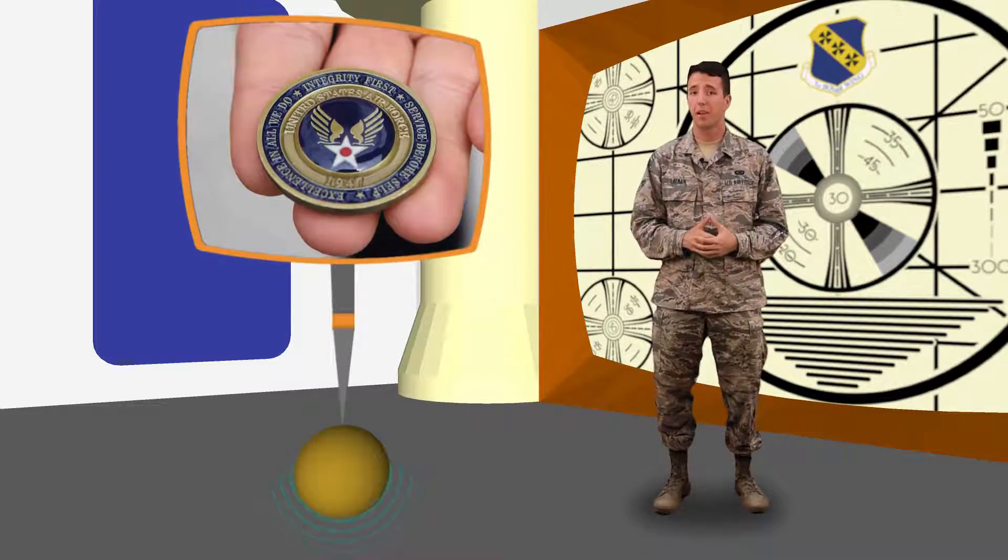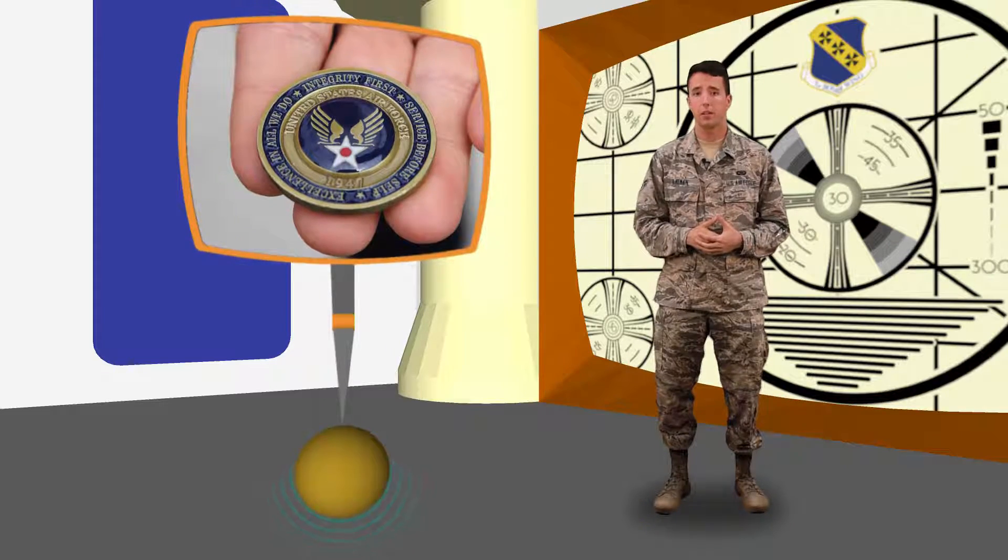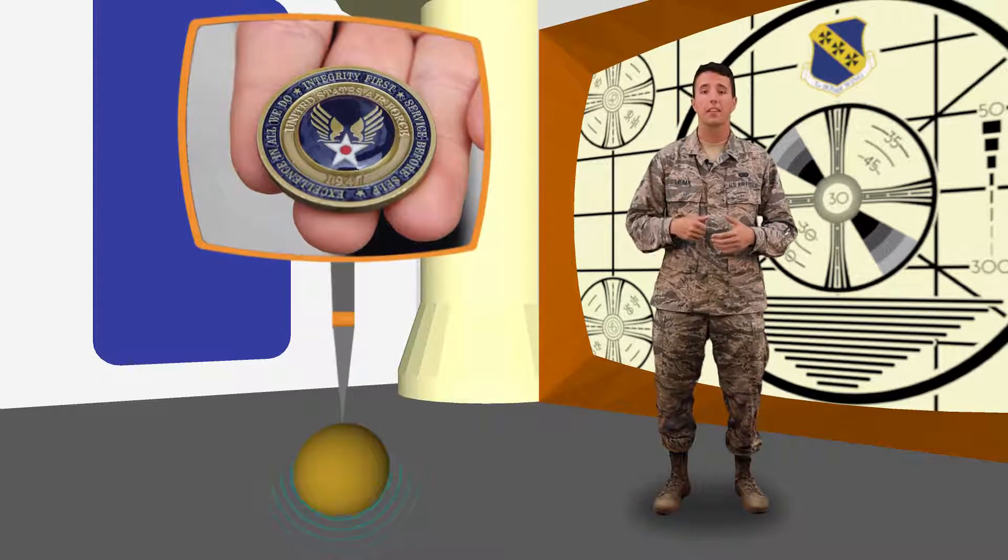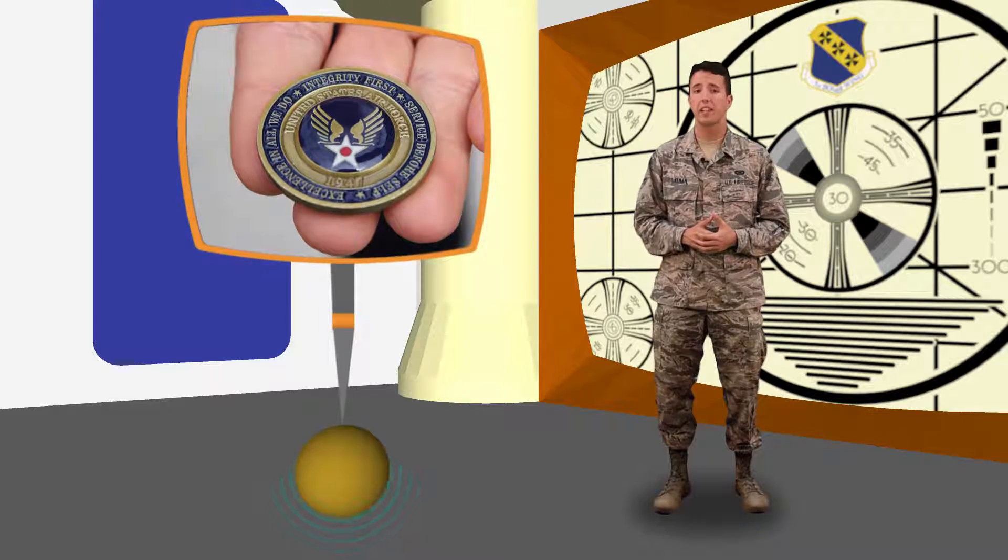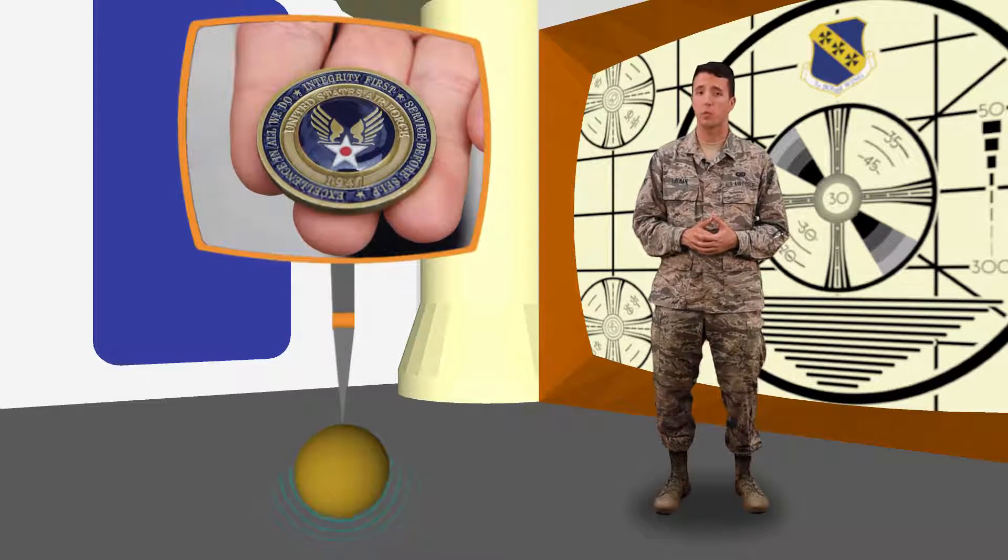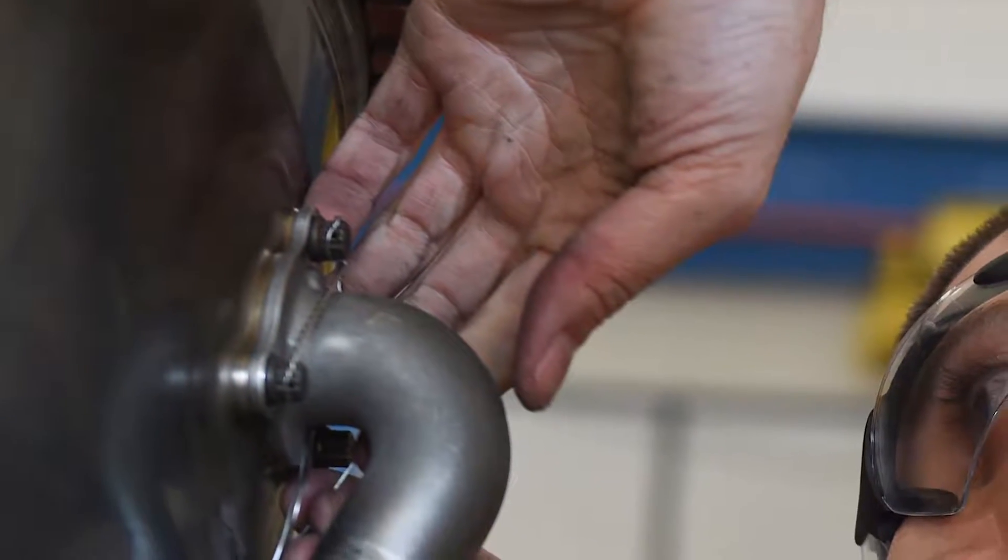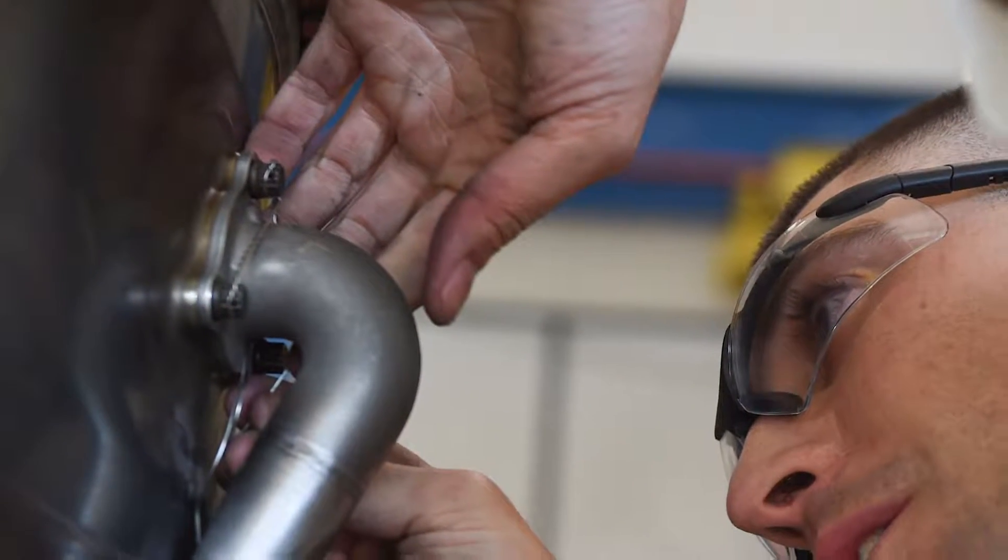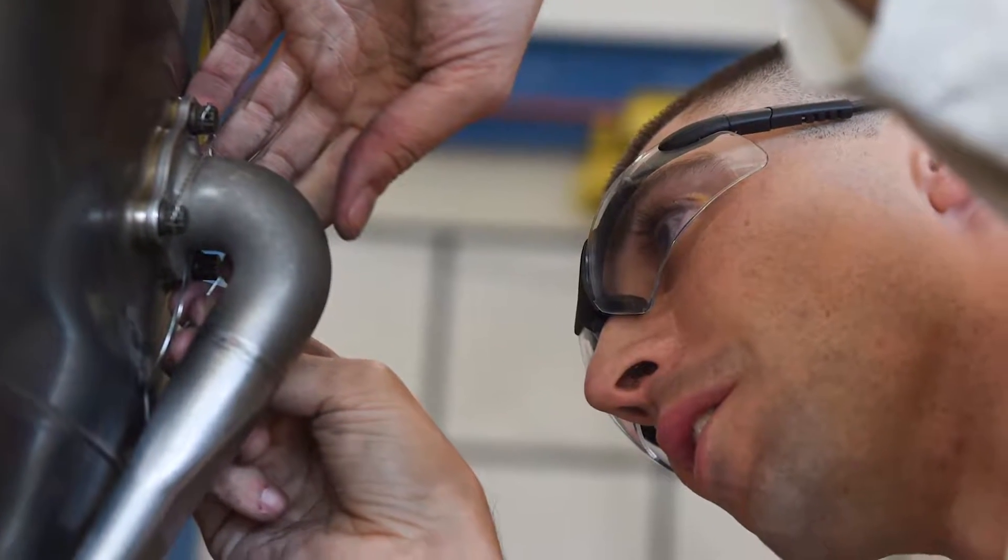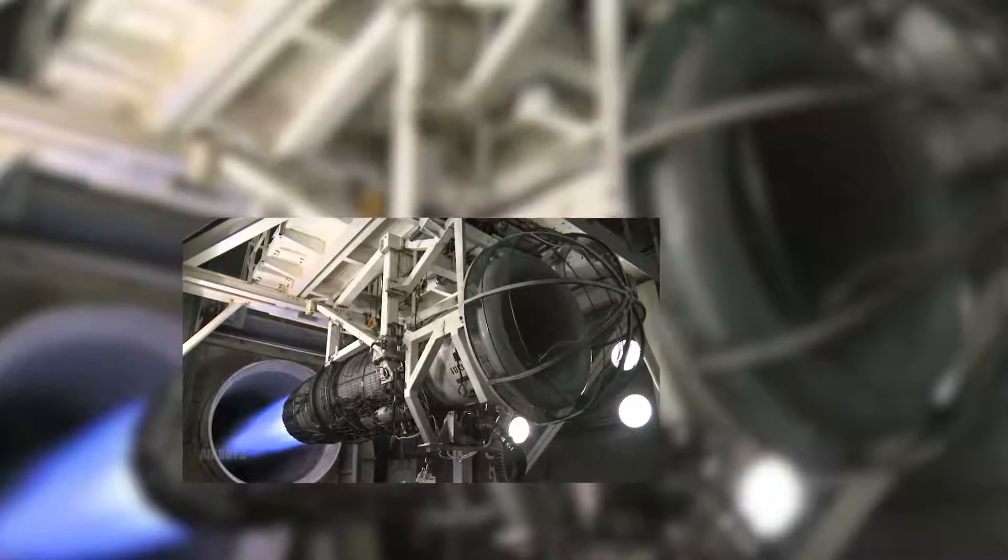Excellence is the standard, and our airmen hold tight to that ideal, so you can practically jot us down in the Guinness Book of World Records because Dyess maintainers are looking to break one in the coming weeks. Airman First Class Quedrati pens the Road to 40 achievement, where the 7th Component Maintenance Squadron seeks to break their previous record of 39 F-101 engines on standby for the B-1 Bravo Lancer.